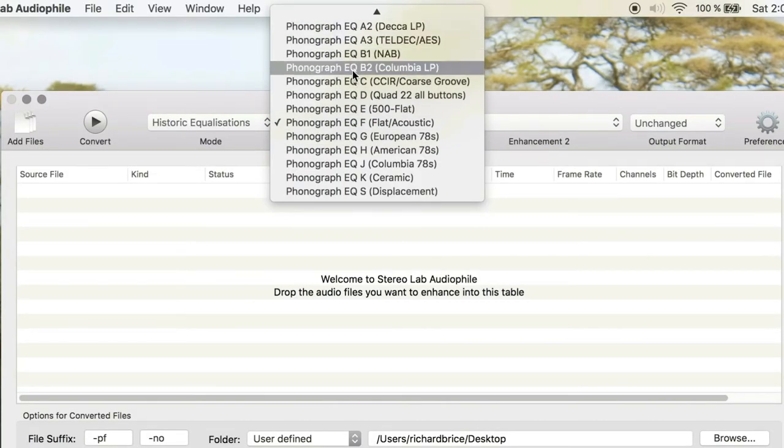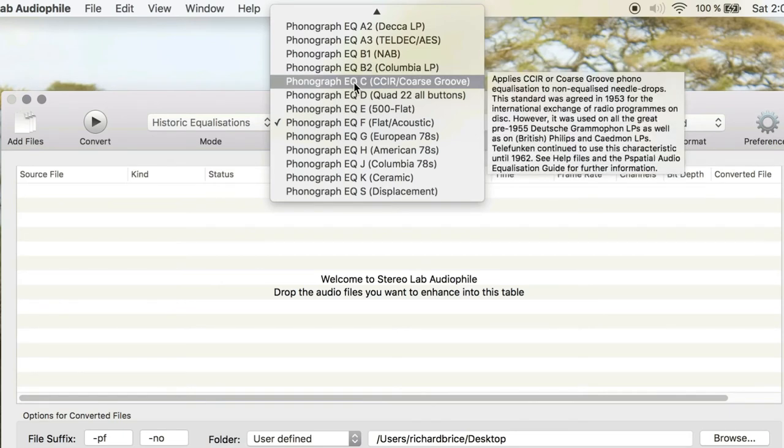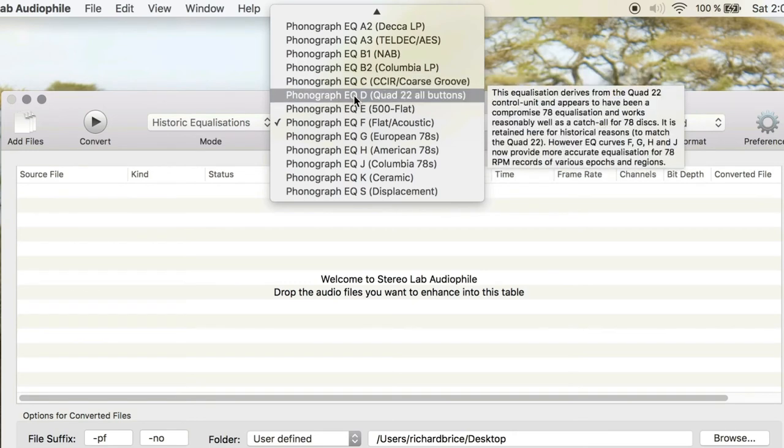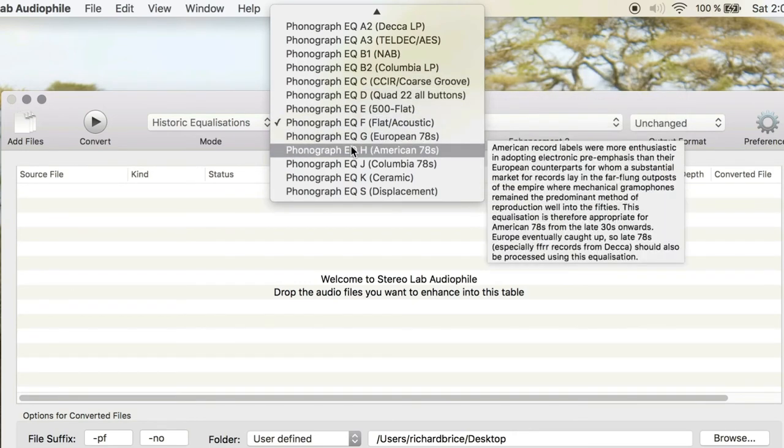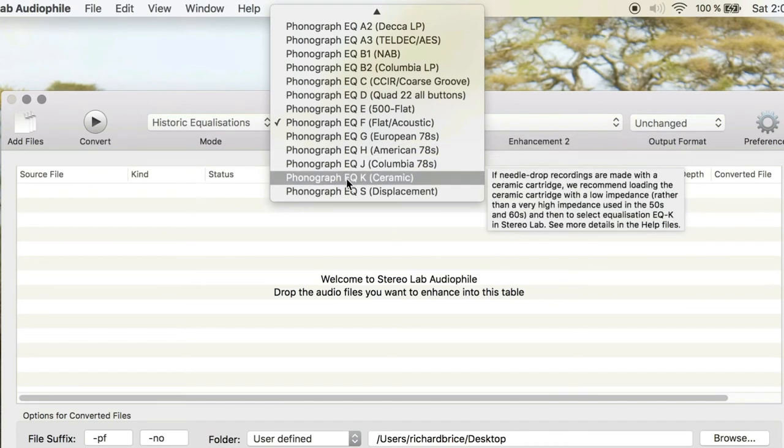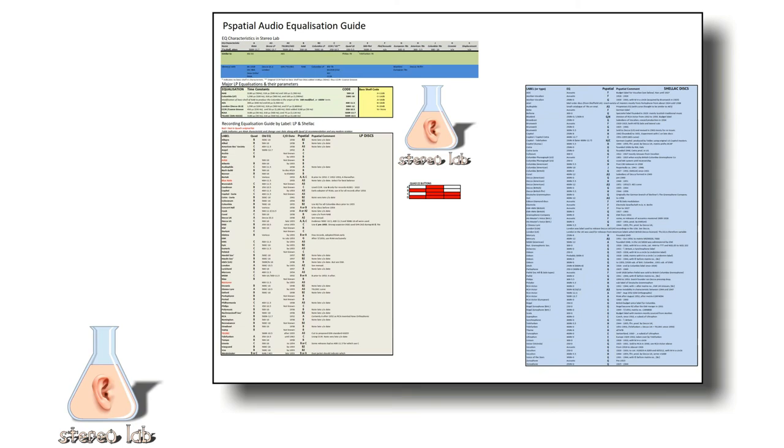And just notice that if you hover on any of the equalizations, you have a context-sensitive help which pops out. And that's a quick way to choose which is the appropriate equalization. Although we do also, with the software, publish our own equalization guide to help you to select the appropriate equalization given the date and provenance of the disc.